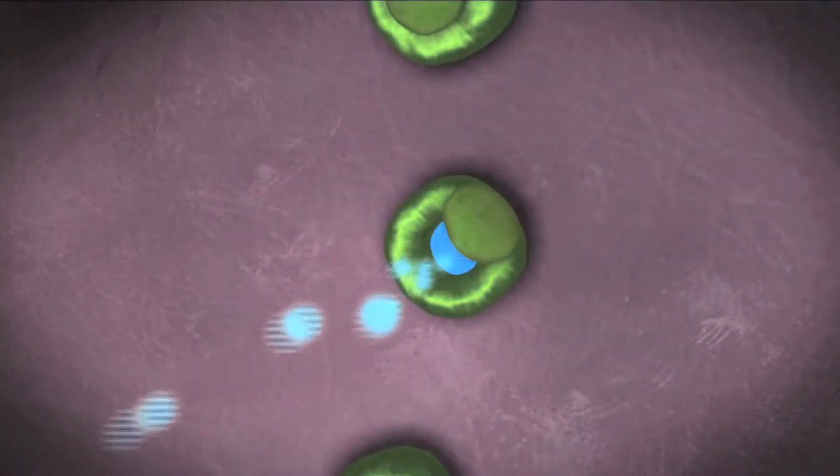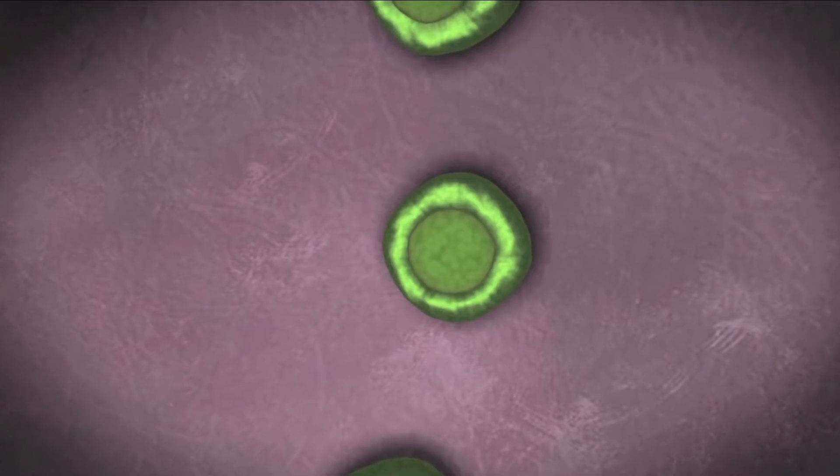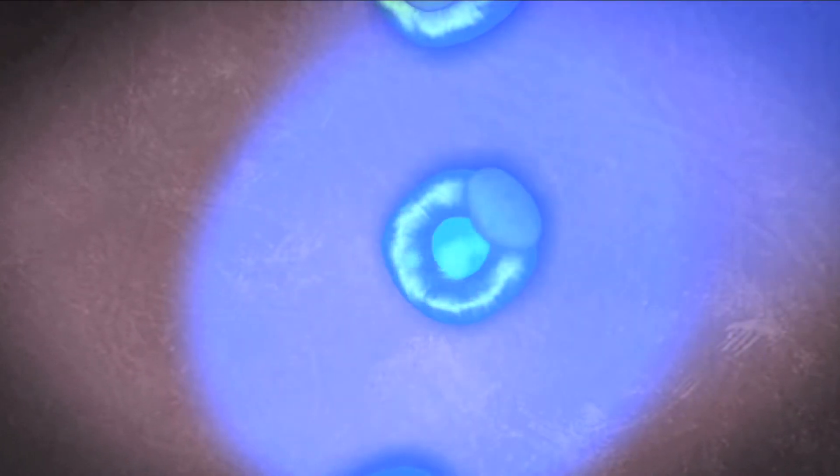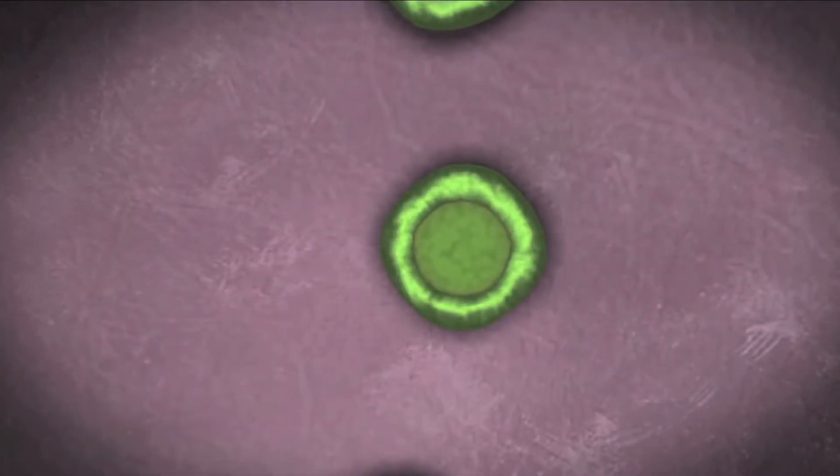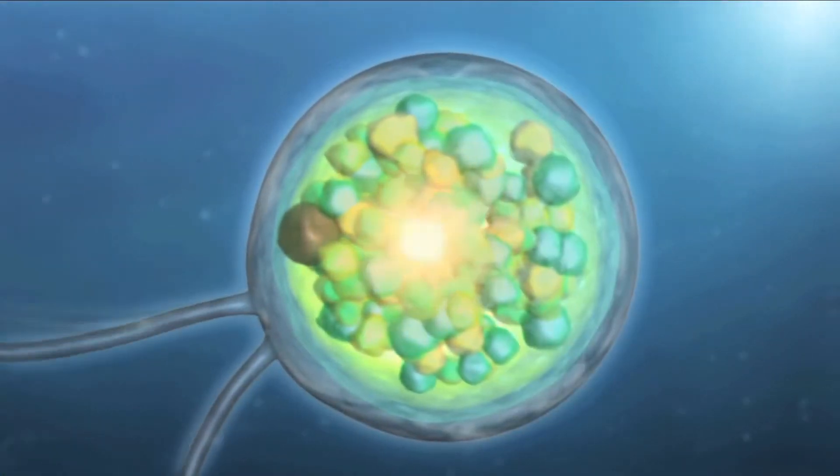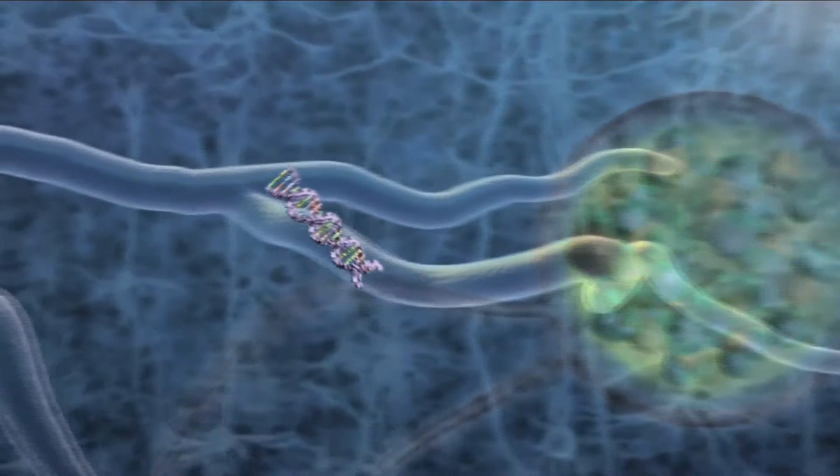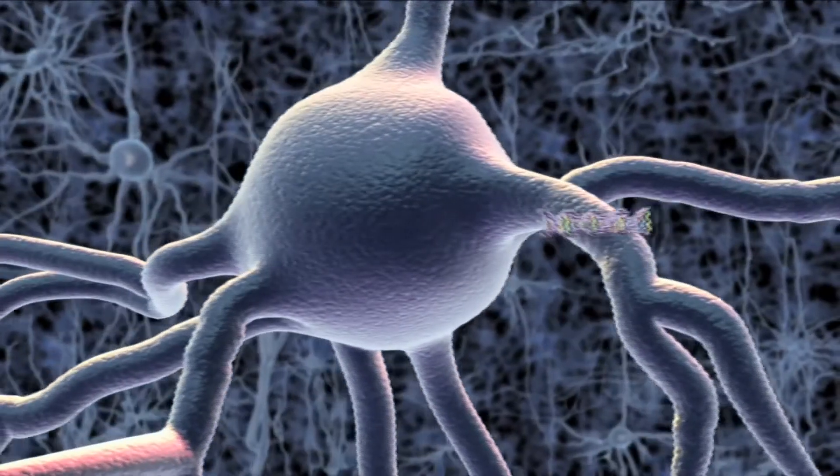But neurons are also electrical devices, and their voltage would also change if channelrhodopsin could be inserted into their membranes and then illuminated. So researchers took a piece of DNA that encodes for the channelrhodopsin protein, then they put